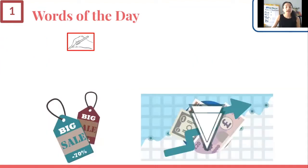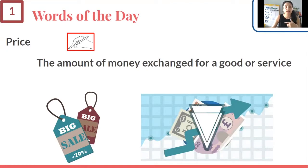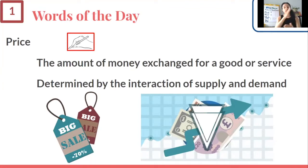Our last word is price. Price is the amount of money exchanged for a good or service — and we're not just thinking about things you can hold. We're thinking about services too, like a ride-sharing app, dry cleaning, or using a laundromat. Most importantly, price is determined by how supply and demand interact. It's not a random decision — price is something really thought through based on what producers and consumers are willing and able to buy and sell.